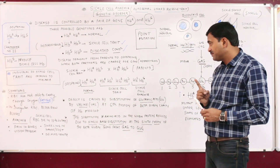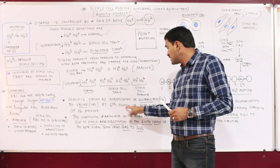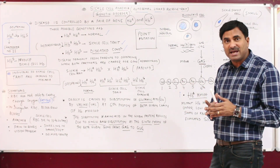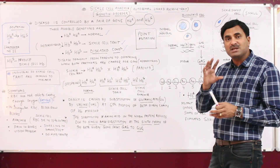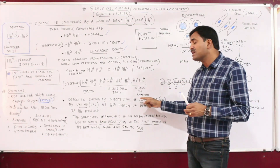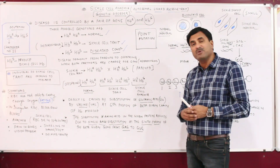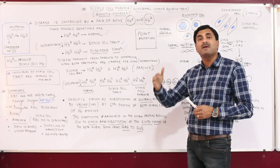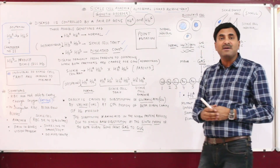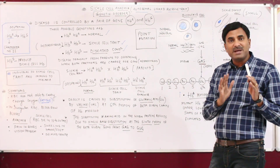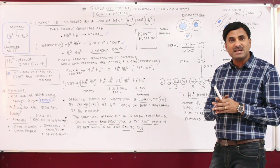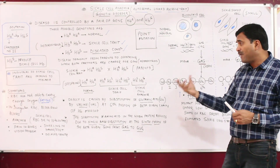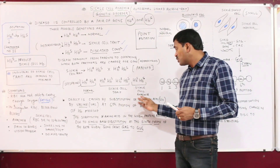The defect is caused by the substitution of glutamic acid by another amino acid, valine, at the sixth position of the beta-globin chain of the hemoglobin molecule. In normal persons, the amino acid at the sixth position of the beta chain of hemoglobin is glutamic acid. But due to molecular mutation, the glutamic acid at the sixth position of the beta chain is replaced by the amino acid valine. When this substitution occurs, the sickle cell anemia defect is caused.